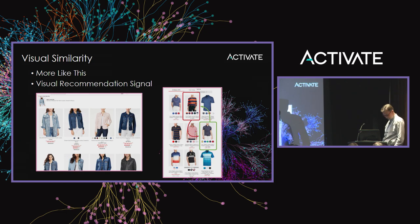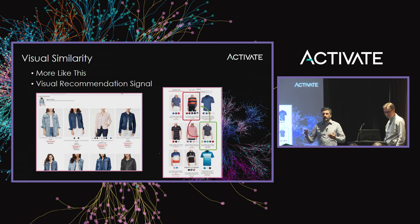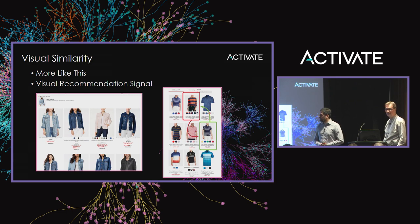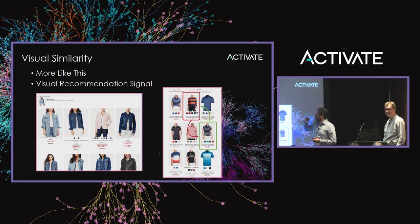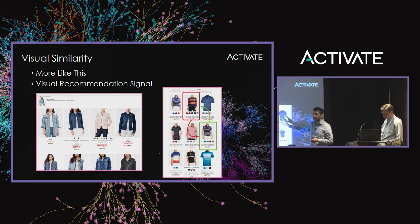Visual similarity is more like a recommendation system. You have a corpus of images, you find a list of similar images for each image in your catalog, and when a customer requests similar images, you present them. Another way to think about it is using visual recommendation signals to re-score or re-order products in result sets.